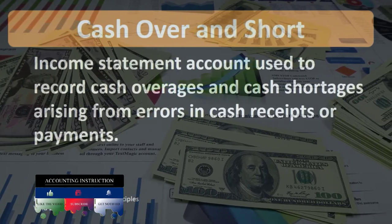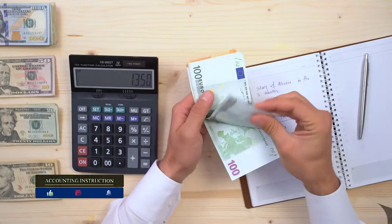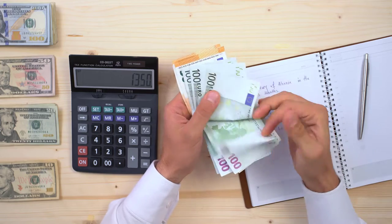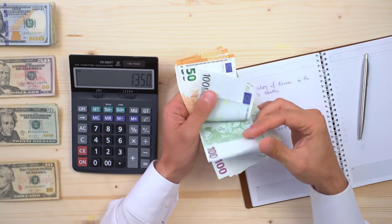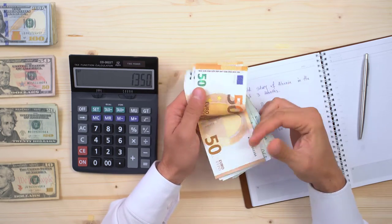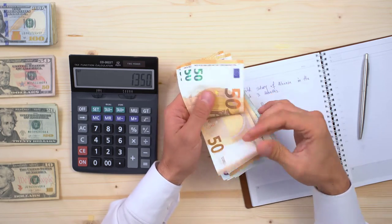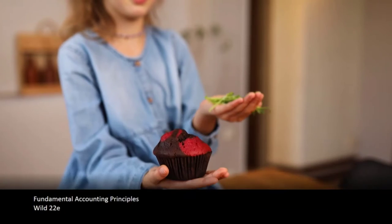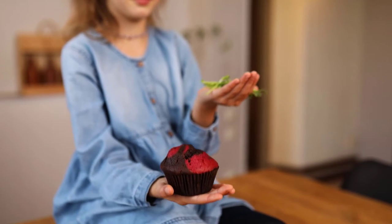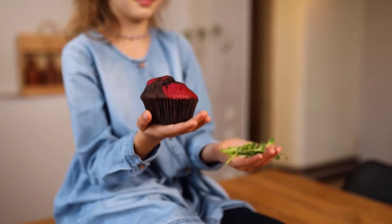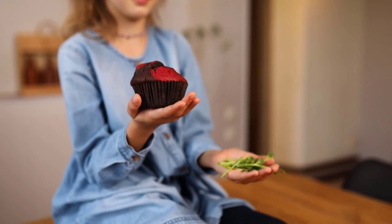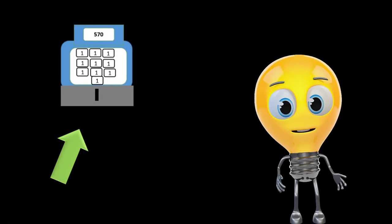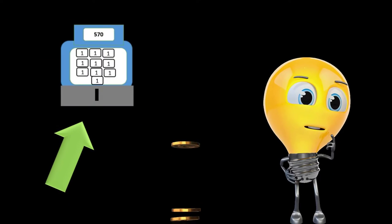If there is a difference between what we believe the cash should be in terms of sales and what we actually have in cash, we're going to have to put that difference to some account. The cash over/short account will track those differences.